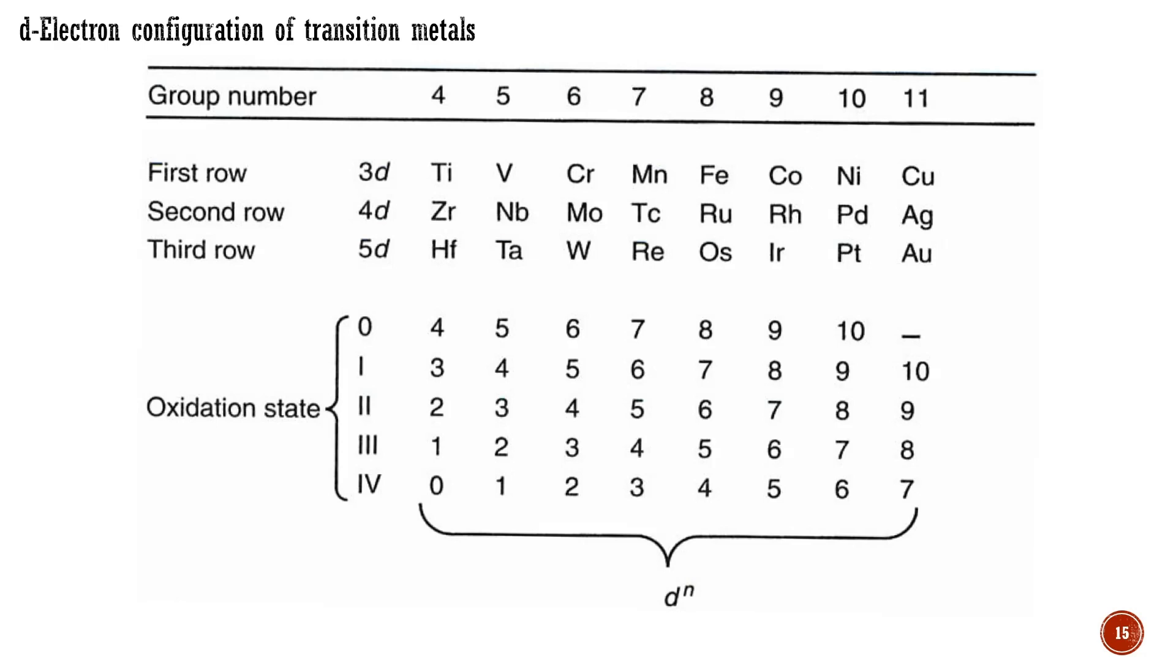This figure presents the transition elements along with their d-electron count. At an oxidation state of zero, the number of d-electrons is equal to the group number of the metal. If the metal has a formal oxidation state of two, you can calculate the number of d-electrons by subtracting the oxidation state from the group number of the metal. By referring to the periodic table, the d-electron count for any transition metal in any oxidation state is easily found.